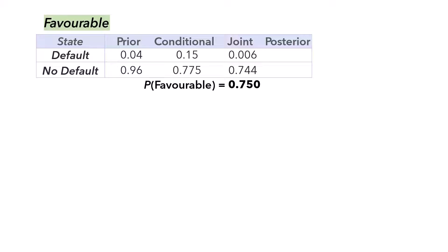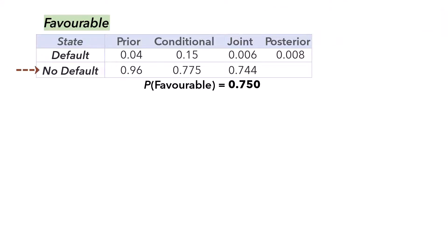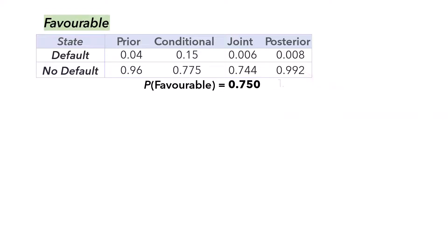The posterior probabilities are calculated by dividing each joint by the marginal. So for default given favorable, we have 0.006 divided by 0.75, which gives 0.008. And for no default given favorable, we have 0.744 divided by 0.75, which gives 0.992. The posterior probabilities are expected to add up to 1.